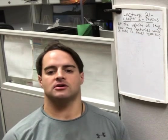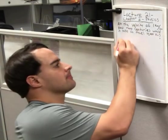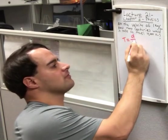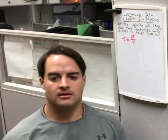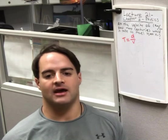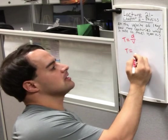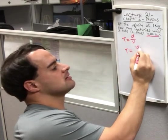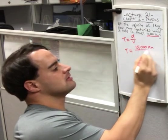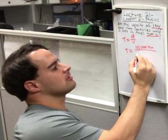With this question, you want to use the equation: time equals distance over velocity. You simply plug in the values — time equals 10,000 kilometers over 1 kilometer per year.